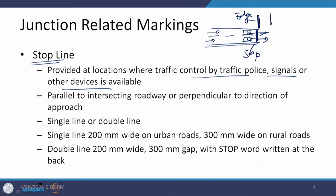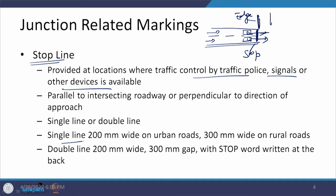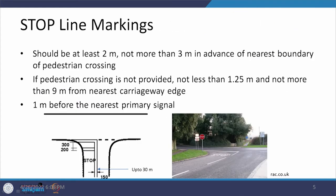For a single line system, the line is 200 mm wide on urban roads and 300 mm wide on rural roads. In a double line system, the two lines placed one after the other are each 200 mm wide with a gap of 300 mm between them. An additional feature is to write the word STOP at the back of these lines — two lines 200 mm wide, spaced 300 mm apart, with STOP written behind them.